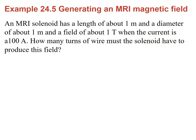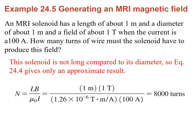Here is an example: you want to use a solenoid of length about 1 meter and diameter about 1 meter to produce a field of about 1 Tesla when the current is about 100 amps. The question is how many turns of wire do you need? Using B equals μ₀NI over L and solving for N, with L equal to 1 meter, B equal to 1 Tesla, μ₀ equal to the permeability constant, and current equal to 100 amps, you get approximately 8,000 turns.